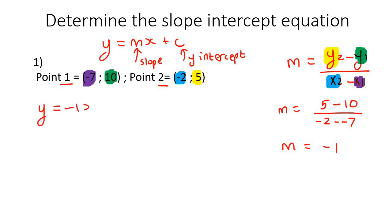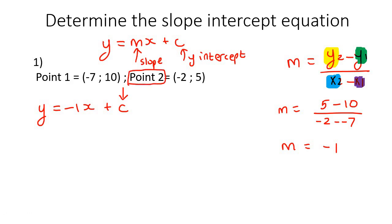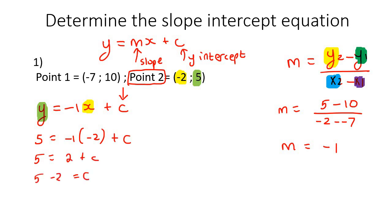So we fill in the slope as negative one. To find the c-value, you choose a point — either point one or point two, it does not make a difference. Let's choose point number two: plug in negative two as the x-value and five as the y-value. So five equals negative one times negative two plus c, giving us five equals two plus c. Take the two over: c equals three. So the final answer is y equals negative one x plus three.